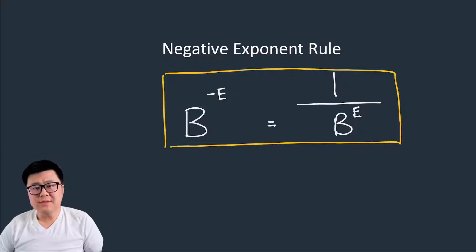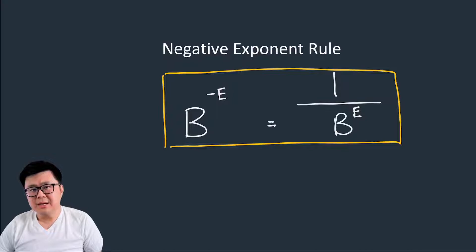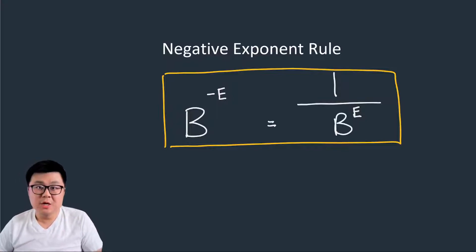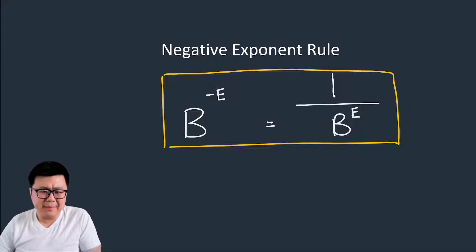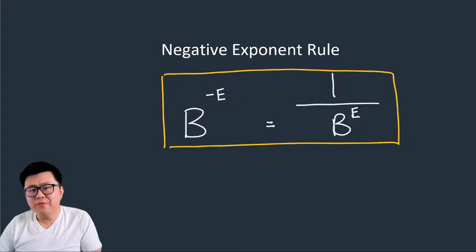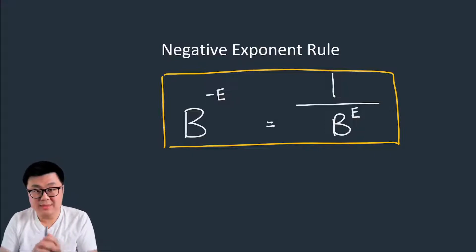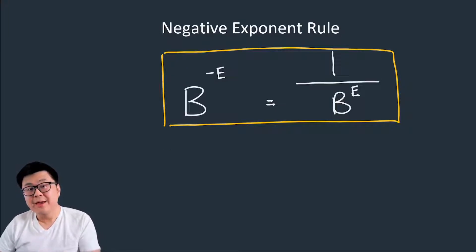The next rule is the negative exponent rule. Usually this rule is introduced after the product, quotient, and power rules — but I'm teaching it first because in the quotient rule you'll sometimes need it. If you look at the standard definition, b to the power of a negative exponent equals one over b to the positive version of that exponent. Basically, if you take the reciprocal of the base with a negative exponent, you can turn that exponent into a positive. But I'll be honest — this rule as written is extremely misleading and has confused more students than it's helped.